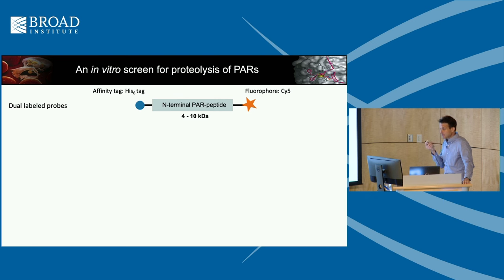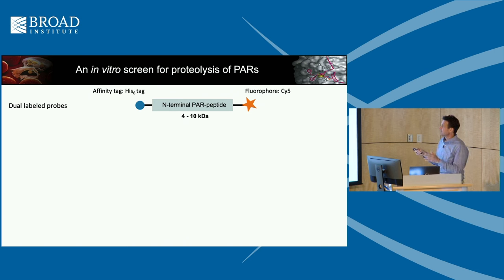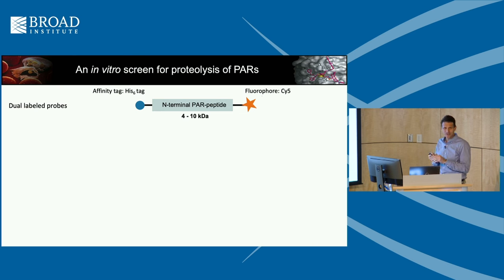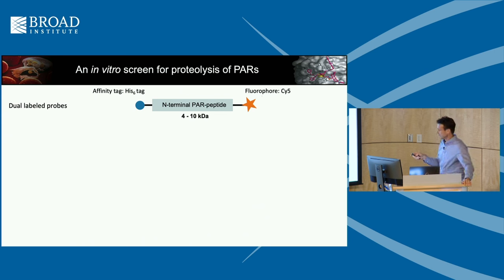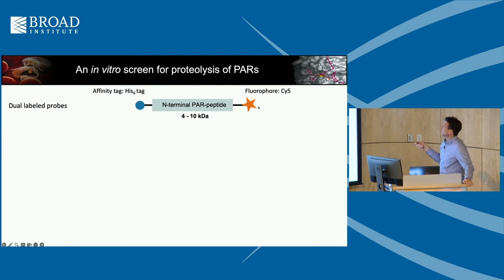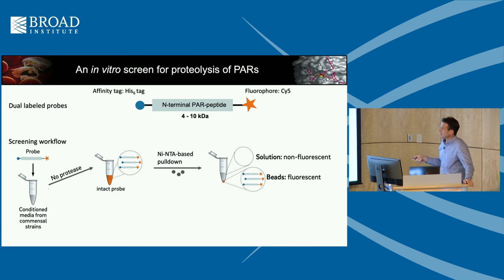Marcus approached this by making a substrate that looks like the PAR N-terminus. You could just synthesize a short peptide, but the problem is we didn't know where the cut site is, so we had to make the whole protein. That N-terminal domain is between 4 and 10 kilodaltons depending on the PAR. Marcus spent a lot of time trying to express this — it turned out to be very insoluble — but finally got it to work with a His tag on one end and a fluorophore on the other end using native chemical ligation, putting a Cy5 dye at the C-terminus.